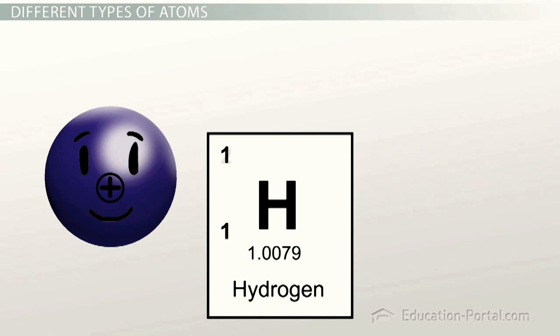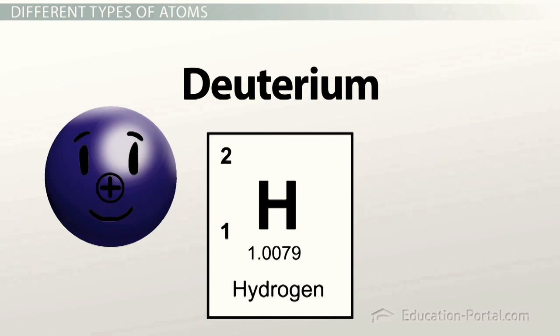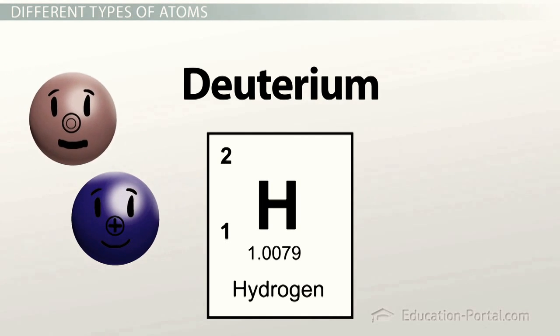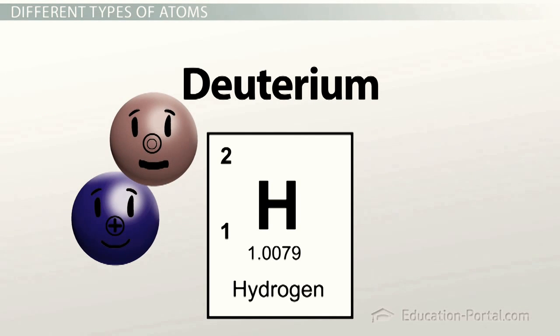The next most common isotope is called deuterium. Its nucleus contains 1 proton and 1 neutron, so it has a mass of about 2 AMU, 2 atomic mass units. It makes up less than 2 hundredths of a percent of the population of hydrogen atoms.